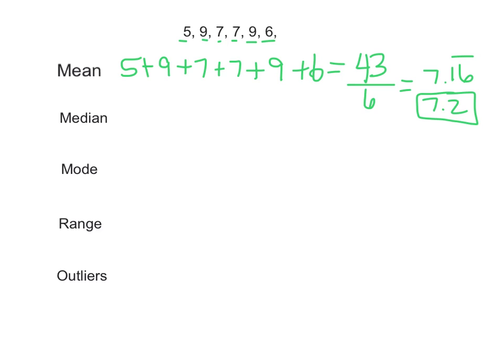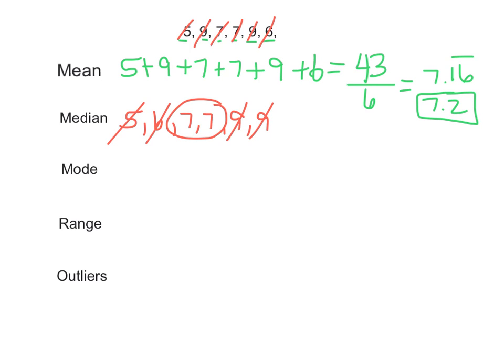Now for the median — to find the median, you put the numbers in order from least to greatest: 5, 6, 7, 7, 9, 9. Now we cross off smallest to biggest until we get to the middle: smallest, biggest, smallest, biggest — and we have two numbers in the middle. So our median is the number right in between. Since these are both 7s, the median is 7. If they were not both 7s — say a 6 and an 8 — we would do 6 plus 8, get 14, and divide by 2; the median would be 7. If it was a 6 and a 7 in the middle, we'd add those to get 13, divide by 2, and get 6.5. So you take those two middle numbers and average them.